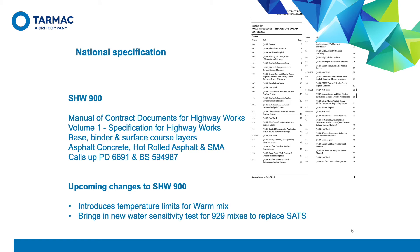Part of the Manual of Contract Documents for Highway Works Volume 1, Specification for Highway Works Series 900 covers bituminous bound road pavements. Many view this as the national spec for asphalt, but its real intention is for asphalt going onto the very heavily trafficked strategic road network — all motorways and major trunk roads managed and maintained by Highways England and the Devolved administrations. It covers base, binder and surface course layers in asphalt concrete, hot rolled asphalt and SMA, and relies heavily on both PD 6691 and BS 594987, but modifies requirements to reflect traffic levels on the strategic road network.